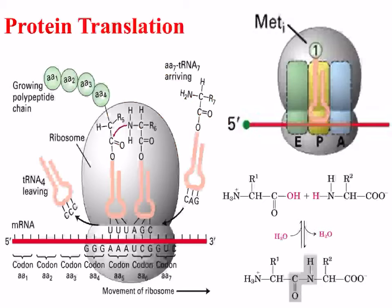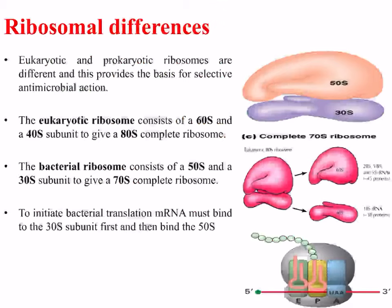Transfer RNA, or tRNA, arrives with a specific amino acid that is dictated by a specific anticodon codon interaction with the mRNA. This arrives at the A site, shown on the top right of the slide, and moves along to the P site where a peptide bond, shown in the bottom right, is formed with a growing polypeptide chain, and then departs from the E site. This happens every time a new amino acid is added to the polypeptide.